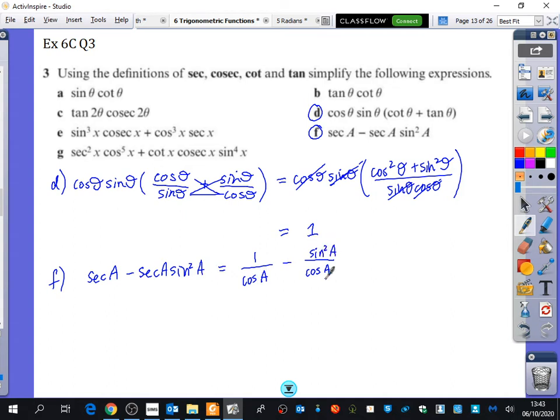Now, with these fractions, because they have the same denominator, I don't need to do any of this fancy algebraic fractions work, because they already have the same denominator. So I can just write cos a here. And on the top, I have one subtract sine squared a.